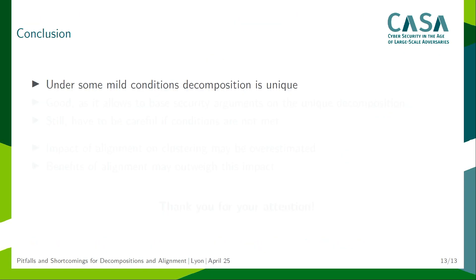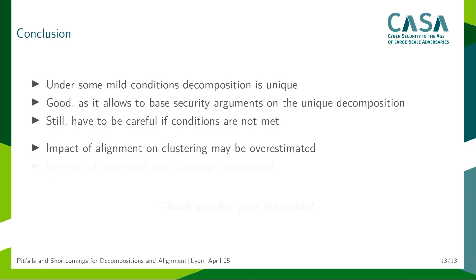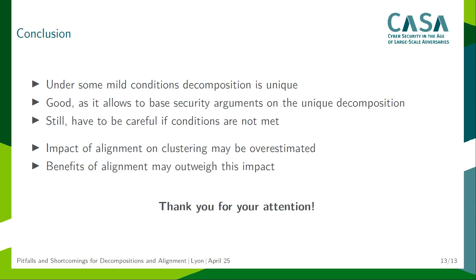To conclude: under some wide conditions, a decomposition is actually unique — this is nice because then we can base security arguments on this unique decomposition. But we still have to be careful if those conditions are not met, as we have seen with the definition of alignment. With respect to alignment, we have seen that the impact of alignment on clustering may be overestimated, and therefore we think the benefits of alignment may actually outweigh this impact — such as using the right trace strategy to bound the probability of a differential characteristic, as done for the AES. Thank you for your attention.